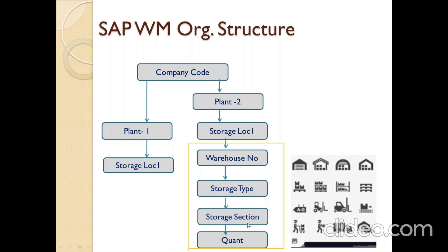Next is the storage section — which section I can keep the material in. The storage bin is where I keep materials in the warehouse. Last is the quant — it is the last organizational warehouse unit, created at the time of goods receipt. If a transfer posting moves material to a new place, the quant is created dynamically. It holds parameters like FIFO, LIFO, and batch expiry for internal warehouse movements.